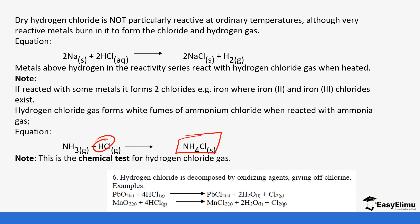Hydrogen chloride is also decomposed by oxidizing agents to give off chlorine. For example, reacting hydrogen chloride with lead dioxide forms lead chloride, water, and chlorine — this is related to the preparation of chlorine discussed in previous lessons. It also reacts with manganese dioxide to form manganese chloride, water, and chlorine gas. These concepts intertwine, and connecting them helps you understand them more deeply.